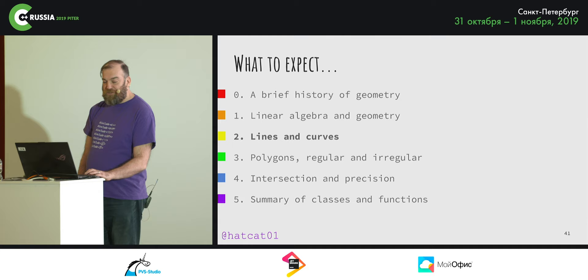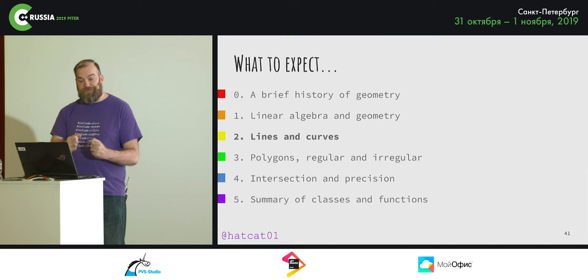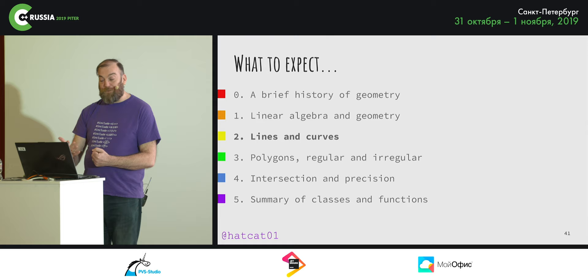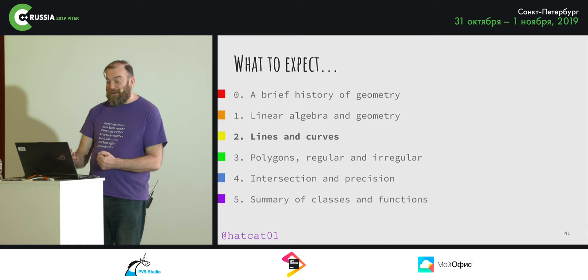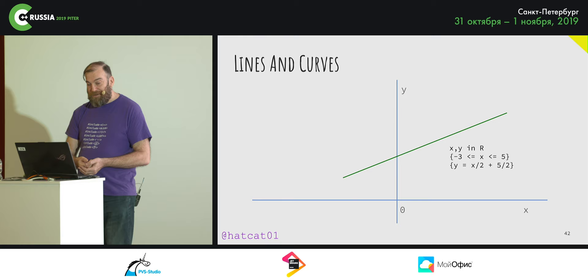How do we model geometric objects in C++? The mathematician will tell you that a line is a set of points satisfying a particular qualification. For example, the x-axis is the set of points (x, y) in ℝ such that y = 0. But it's not a line of finite length — there are no endpoints. More useful would be a line segment with two endpoints. Look at this line segment — it starts at (−3, 1) and ends at (5, 5).